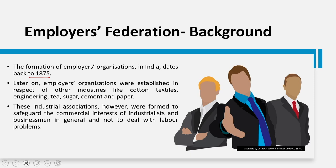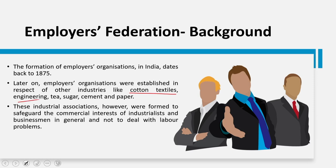Employers' organizations were initially more focused on commercial aspects. Employers' organizations were established in respect of various industries like cotton textiles, engineering, tea, sugar, cement, paper, etc. All these industrial associations or Employers' Federations were formed to safeguard the commercial interest of industrialists. They did not spring up as an antidote to trade unions at the initial level — it was more about safeguarding the commercial interest of industrialists and businessmen in general.